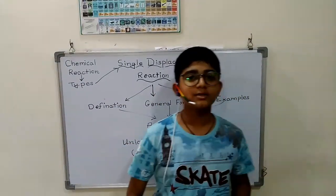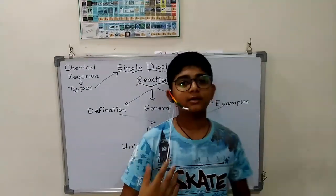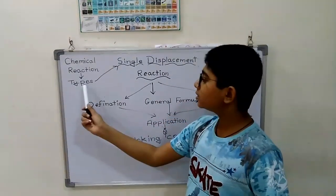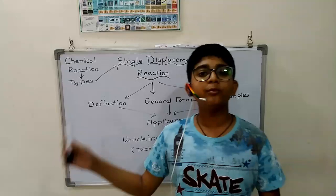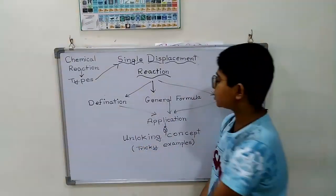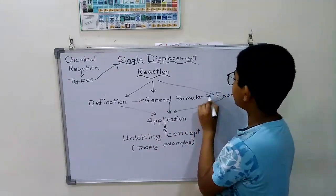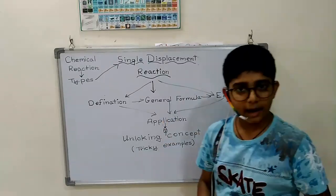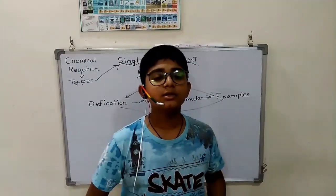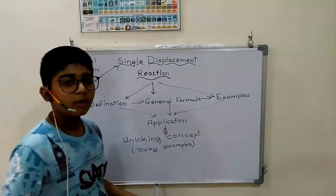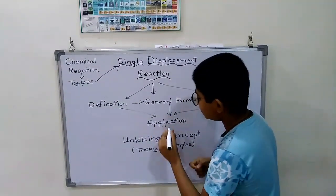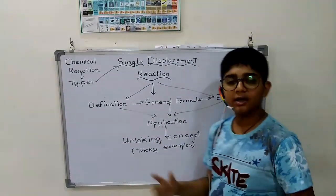Let's look at a concept map of what we have learnt so far. First, we learnt what is a chemical reaction. Then we went through its types and learnt one of the most important — single displacement reaction. After that we covered its definition, general formula, examples, and applications. And now we move to the main tricky part: tricky examples on single displacement reaction.